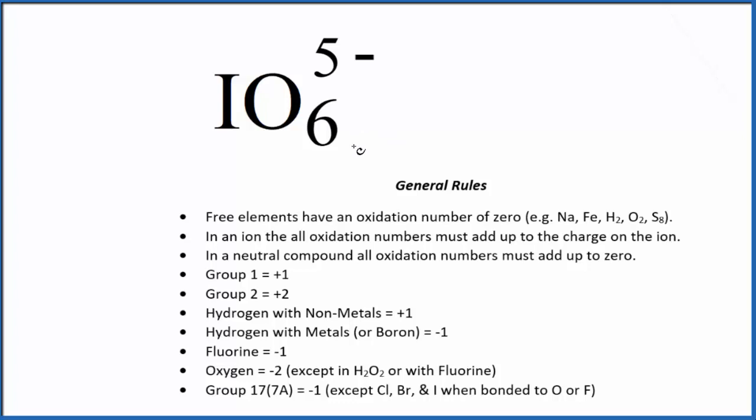When we have ions and we're trying to find oxidation numbers, in an ion, all of the oxidation numbers are going to add up to the charge on the ion. So all the oxidation numbers here are going to equal this 5-.